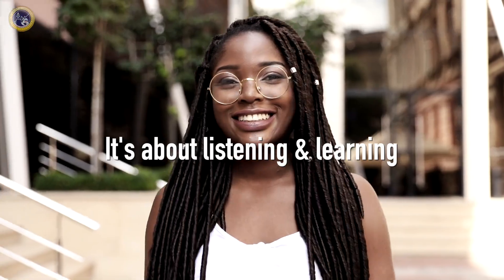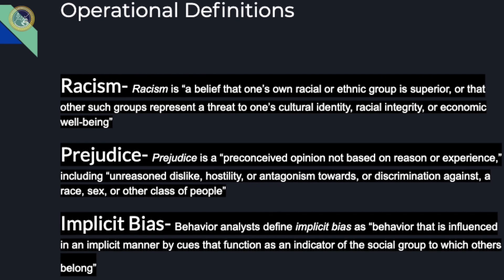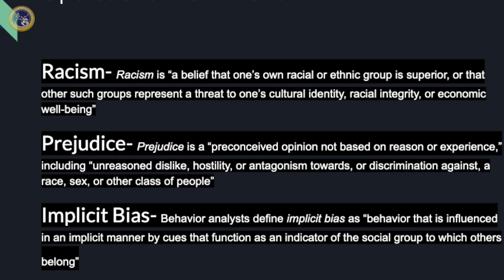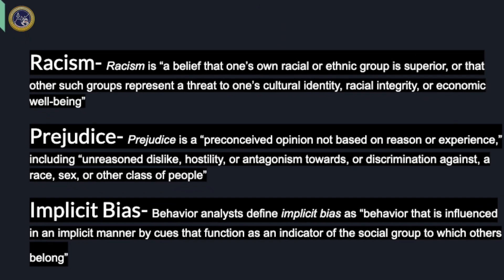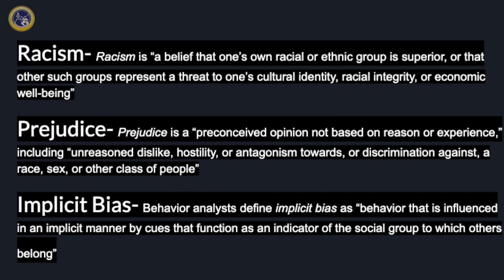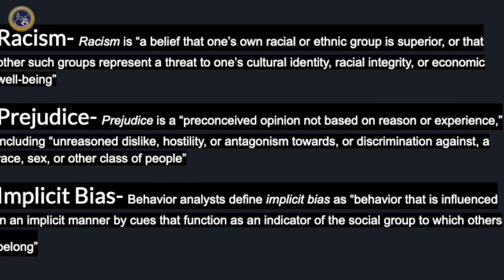The next one is implicit bias. For a behavior analyst, it's behavior that's influenced in an implicit manner — cues that function as an indicator for a social group to which someone belongs. It just means it's an underlying idea about a certain group that isn't indicated by any other factors necessarily.